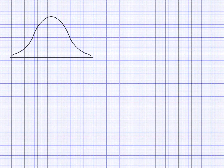This is a bell-shaped curve, associated with the normal distribution. There are many natural phenomena that fit this bell shape, and therefore the normal distribution can be used to find certain probabilities when we're looking at data that fits the normal distribution.